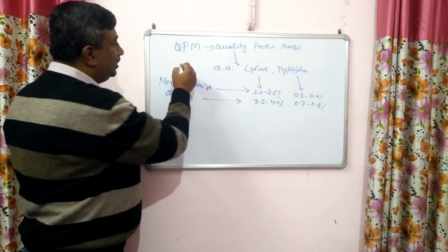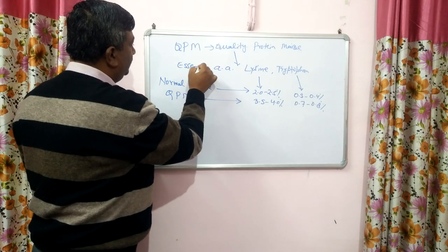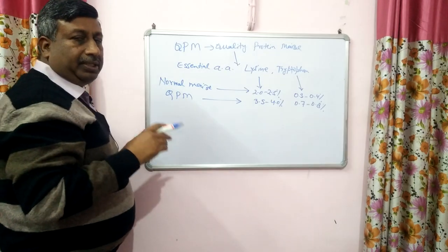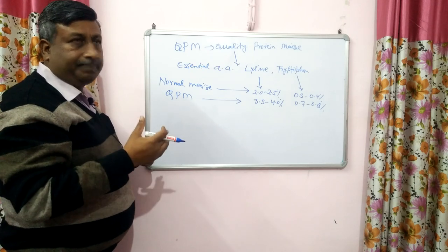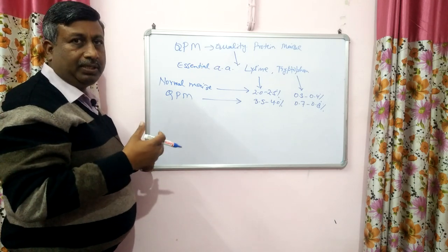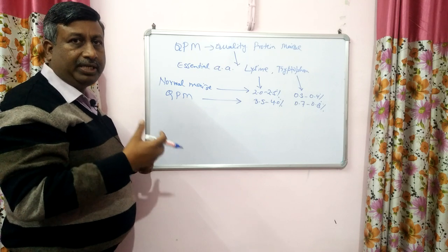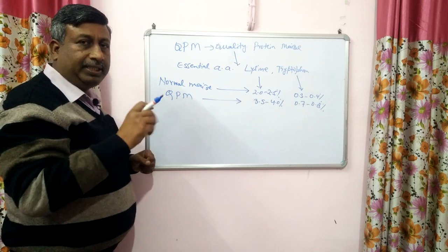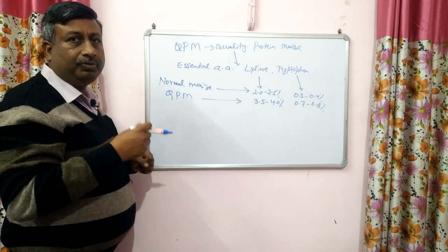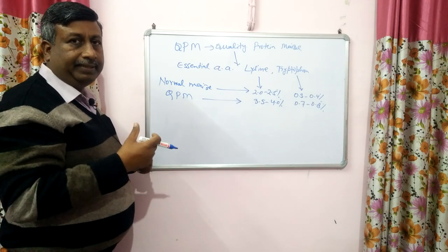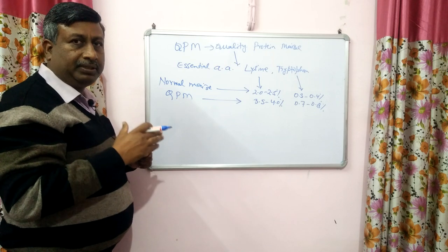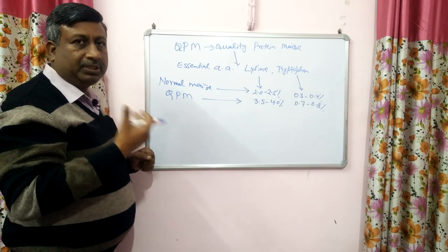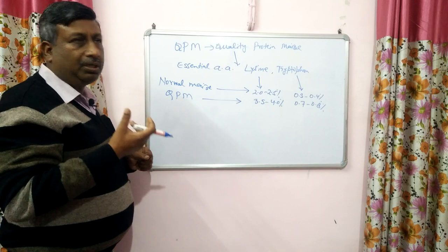These two amino acids are essential amino acids. In general, there are 8 essential amino acids: lysine, tryptophan, leucine, isoleucine, valine, phenylalanine, threonine, and methionine. The 9th is histidine. Adults require 8 essential amino acids; some consider 9 essential amino acids including histidine for children.